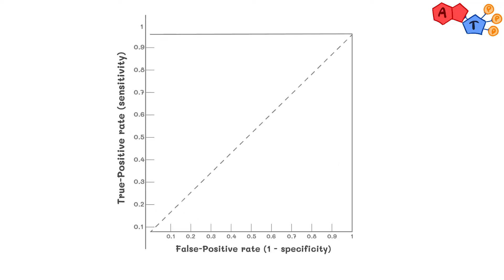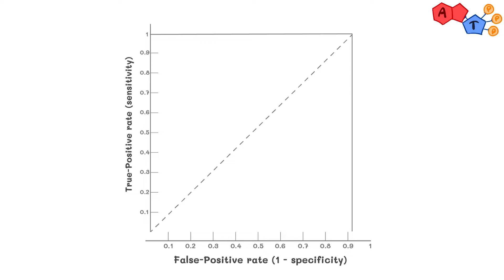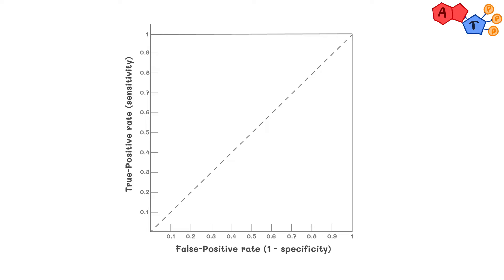The y-axis is the true positive rate, otherwise known as sensitivity. The x-axis is the false positive rate, otherwise known as the complement or the opposite of specificity, or one minus specificity if you will.